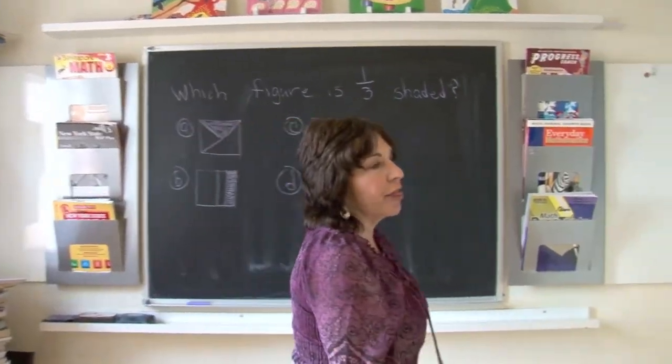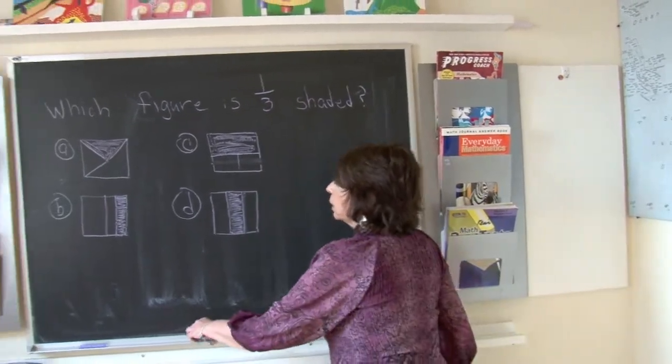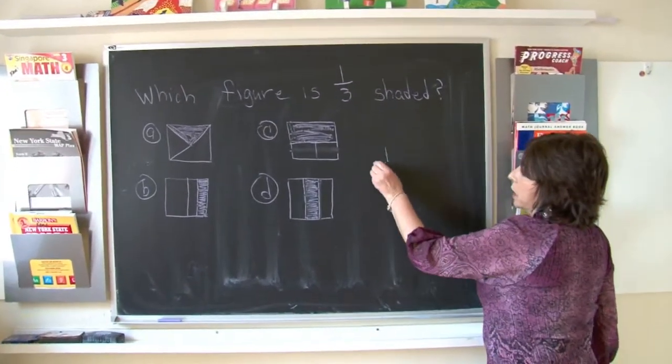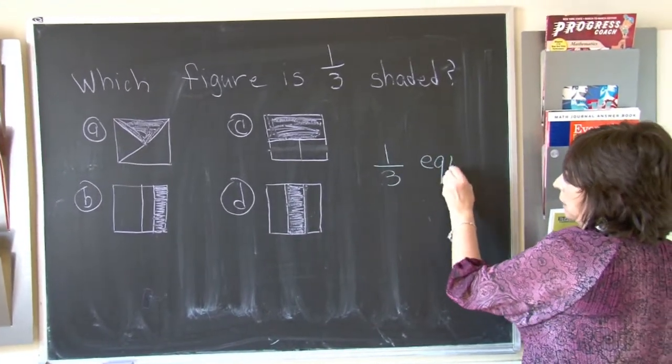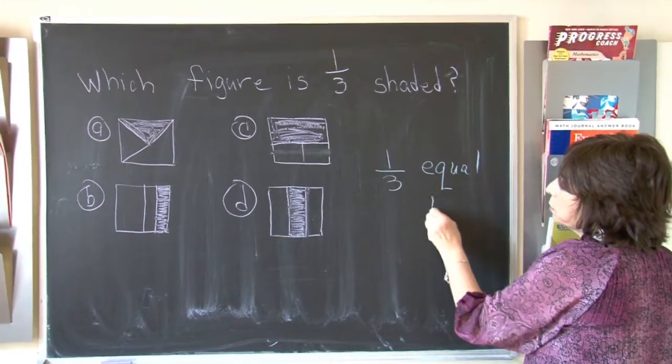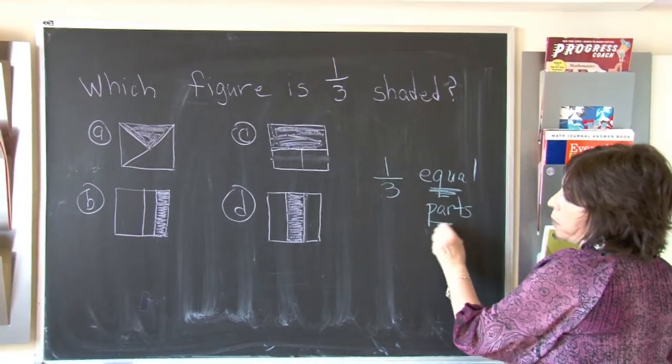When we have one-third, it means one out of three equal parts. One out of three equal. That is what you need to know, equal parts. When we deal with fractions, we deal with equal parts.